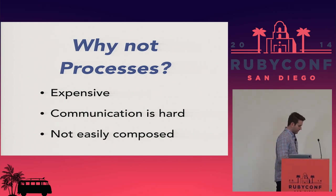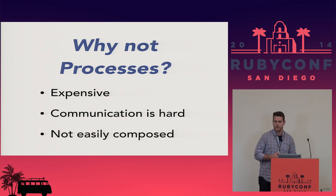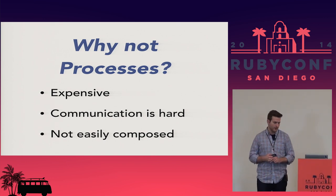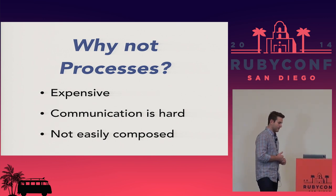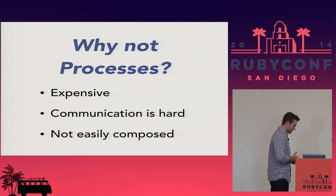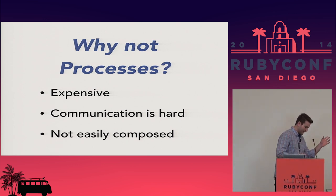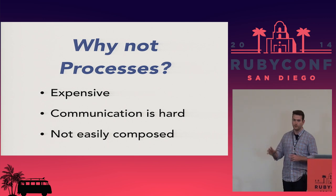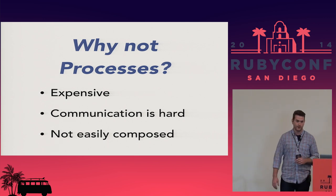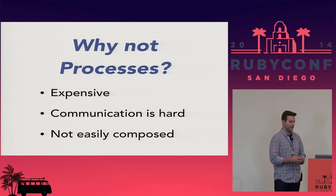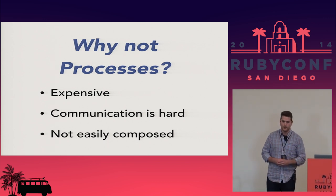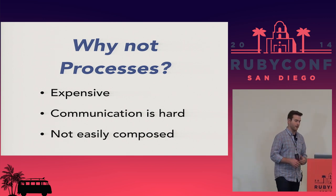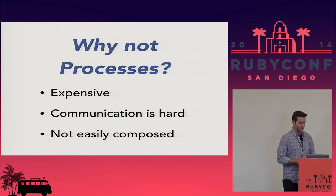We love processes in RubyLand — we love forking and using all that RAM — but it's expensive, and communication is also very hard between lots of processes. I like to call it passive aggressive communication: you have one process that sends something to a message queue, and it doesn't know what other process is going to get that message. They're not actually communicating directly, and if you're not communicating directly you can't create really robust, composable things.